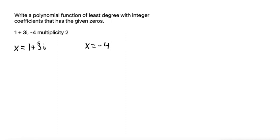One thing about zeros that are imaginary, that means they will also have the conjugate zero. So it will also have a second zero that is 1 minus 3i. That's the conjugate to the imaginary zero that's given.